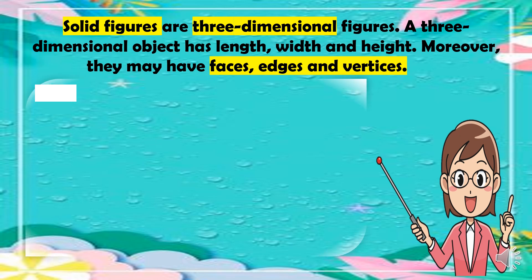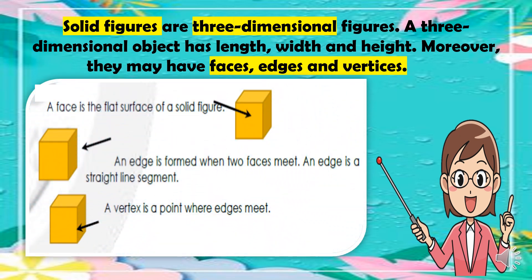Moreover, solid figures may have faces, edges, and vertices. A face is the flat surface of a solid figure. An edge is formed when two faces meet, and an edge is a straight-line segment. A vertex is a point where edges meet.